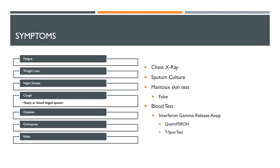Symptoms of TB infection include fatigue, weight loss, night sweats, cough with either rusty or blood-tinged sputum, dyspnea, orthopnea, and rales.